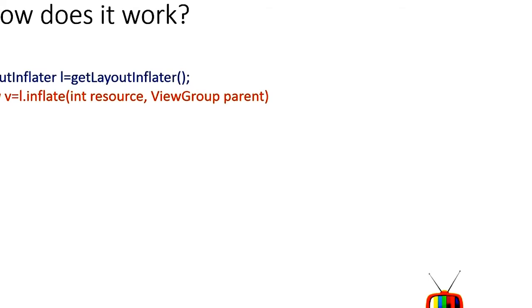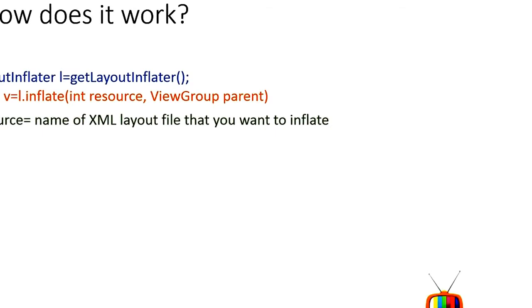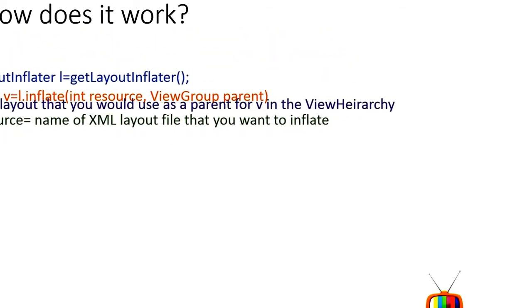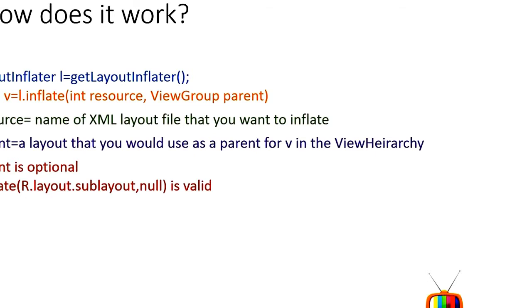The key line is: View V = L.inflate(). This inflate method takes the XML file you want to inflate and converts it into a Java object — your View V. It has two parameters: first, int resource — the name of the XML layout file you want to inflate; second, ViewGroup parent — the layout you want to use as the parent for the inflated layout. For example: L.inflate(R.layout.sub_layout, null). R.layout.sub_layout refers to sub_layout.xml inside your res/layout folder.